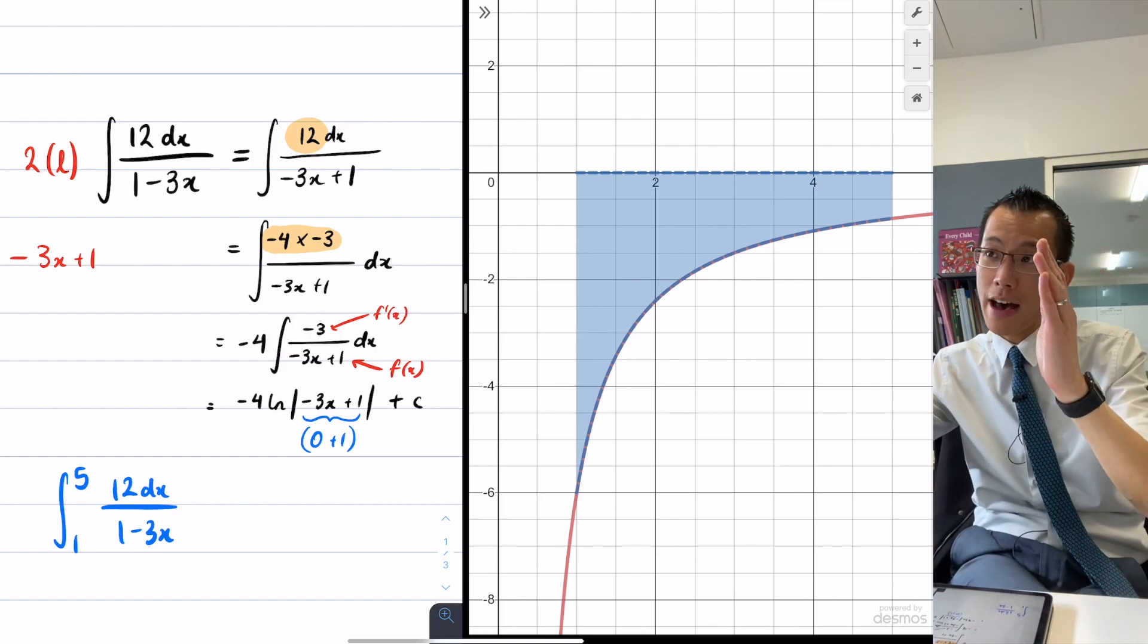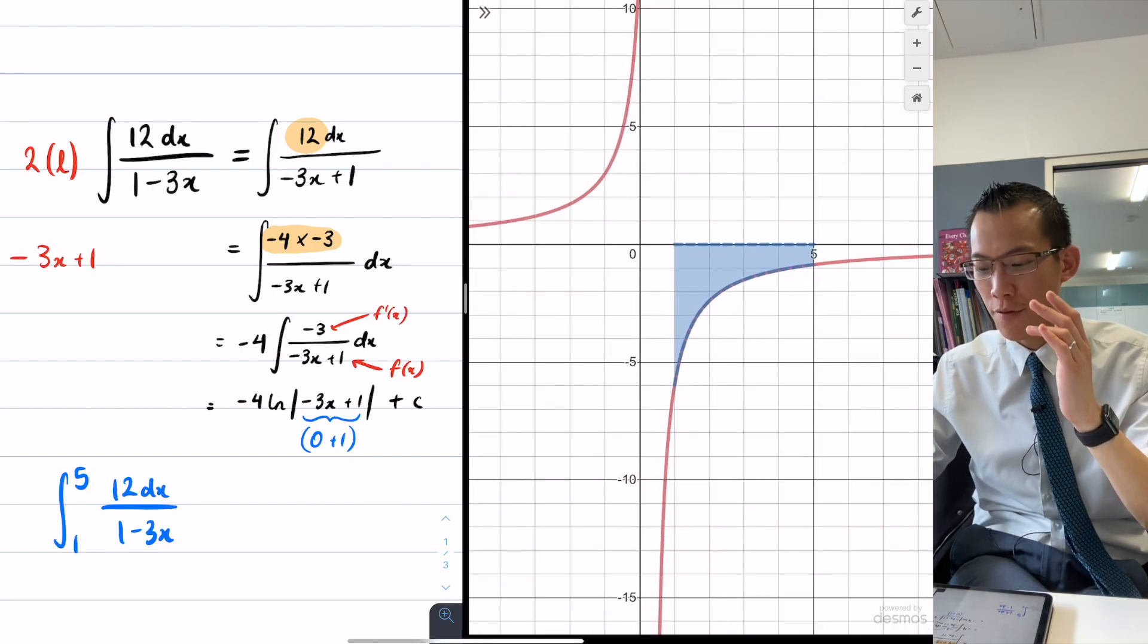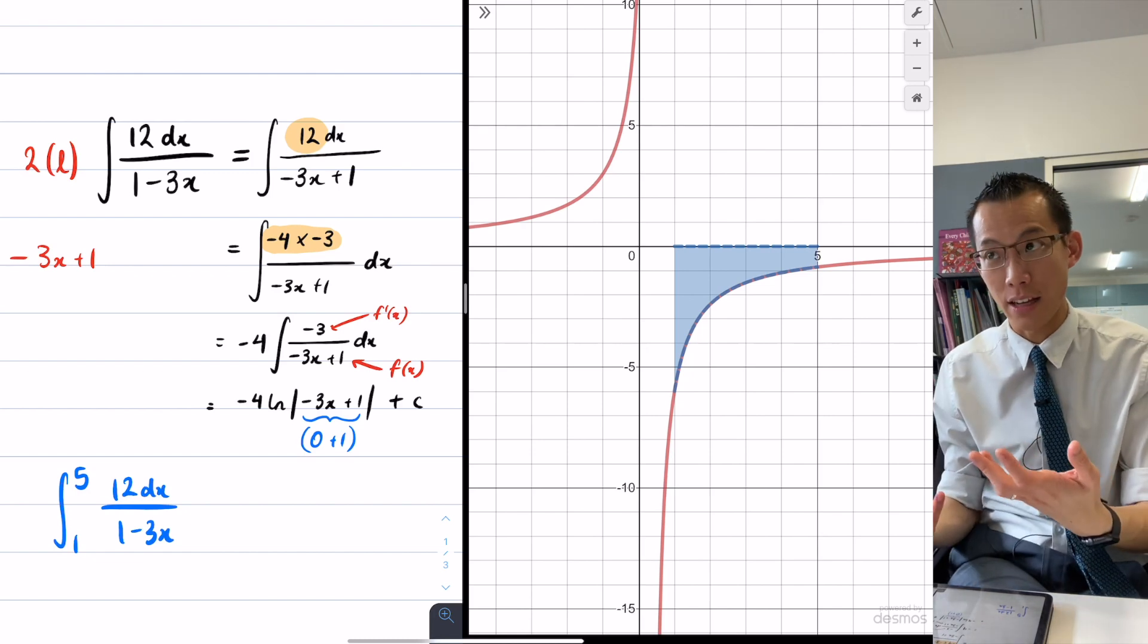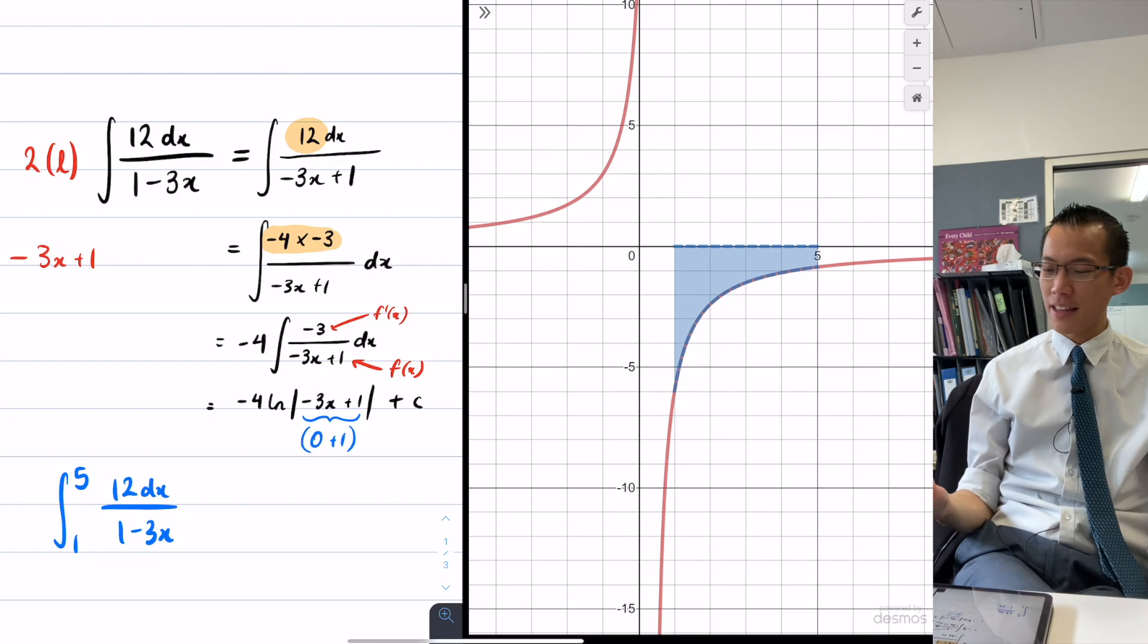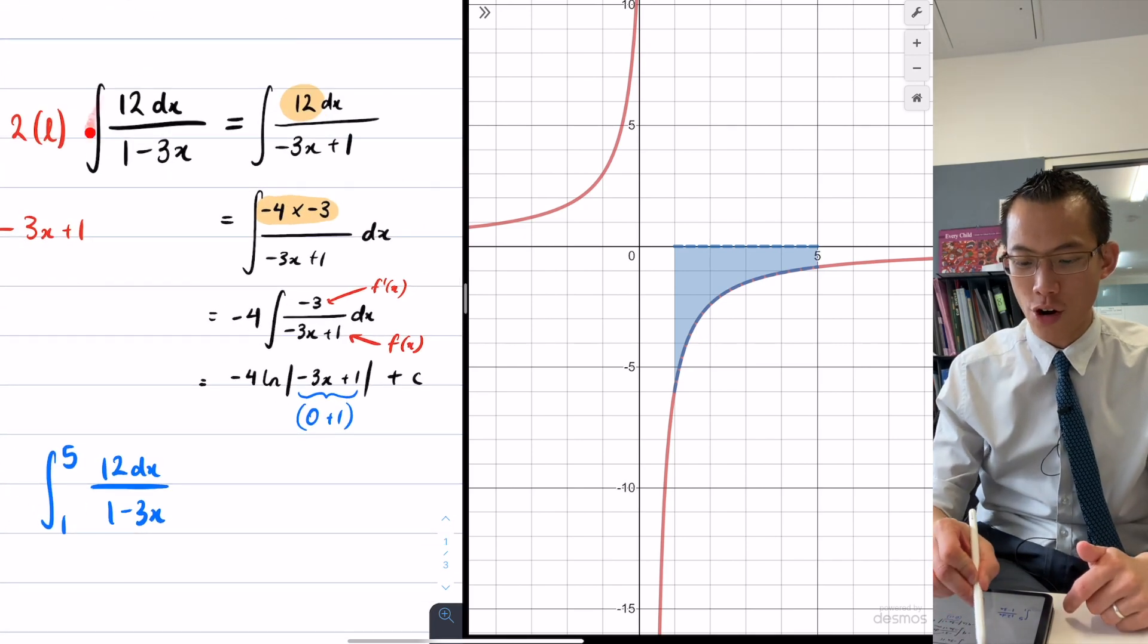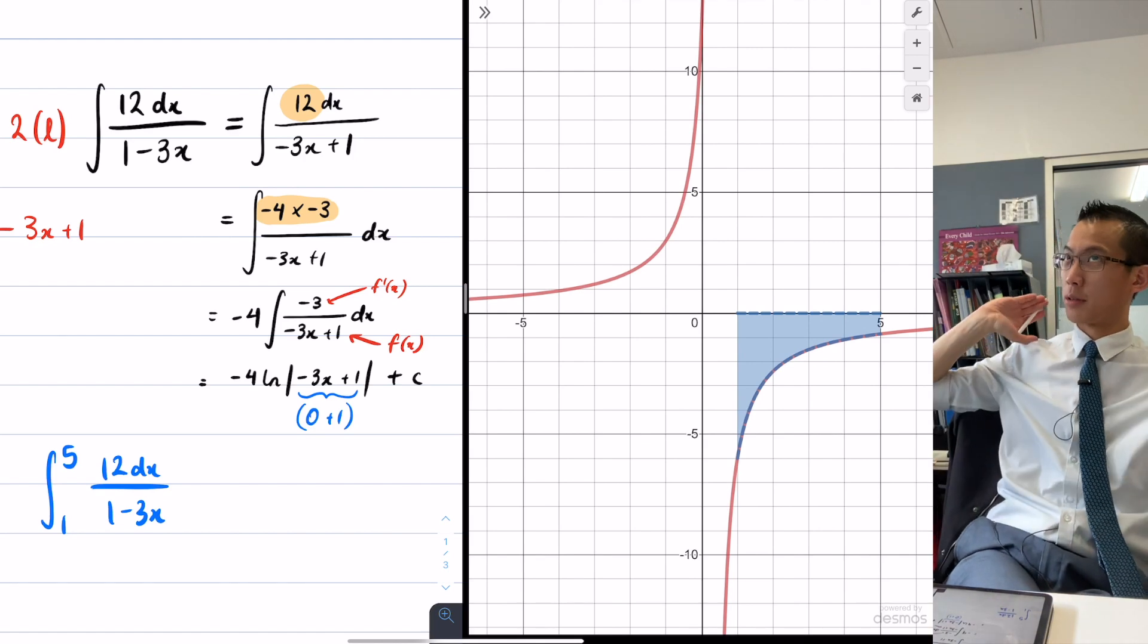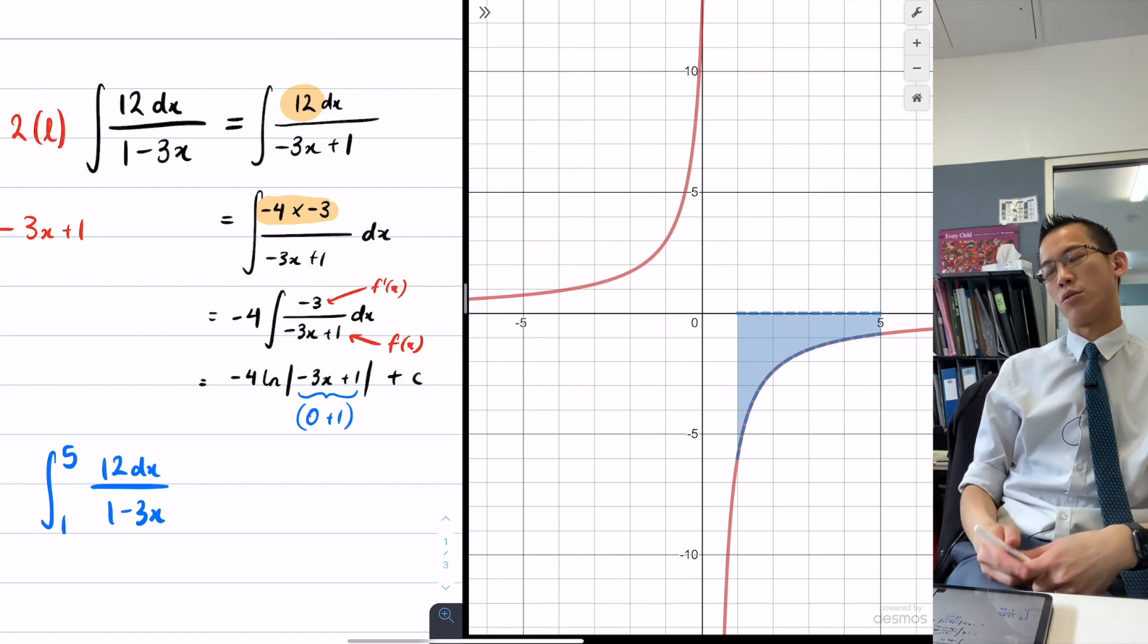But the absolute value signs are there to indicate, actually, the original function you came from, it exists even for these values where the log might look like it's negative. So we fix that by applying these absolute value signs. Sort of cheating. But the whole fact is that if we were to start with a log function, it only exists on one side. But because we started from this guy over here, as you can see by this graph on the right-hand side, it exists on both sides. So therefore, we apply the absolute values to make our integral also exist wherever the original function existed.